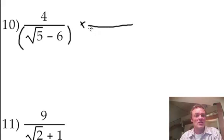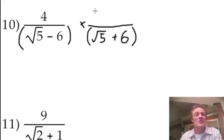So here's the denominator. Well, if I multiply by its conjugate, which for this one is root 5 plus 6. So it's root 5 minus 6, so the conjugate is root 5 plus 6. So that's what I'm going to multiply by. But don't forget, you've got to do that to the top as well.